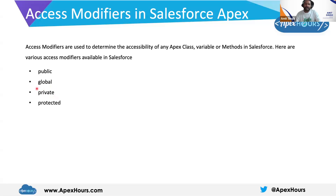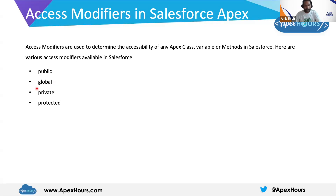Private, as its name indicates, is a private property. No one can access it outside of your Apex class — forget about the Salesforce org, it cannot even be accessed outside of your Apex class. We will cover everything in detail in coming videos where we talk about OOP concepts, so don't worry about that for now. Just focus on the definitions and try to understand.